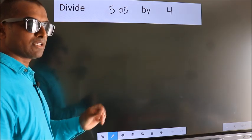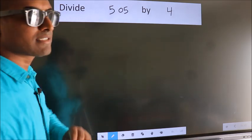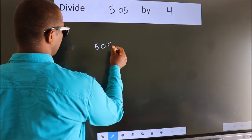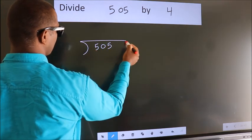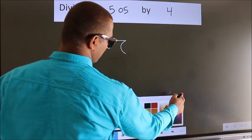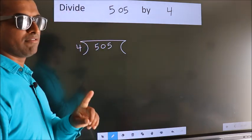To do this division, we should frame it in this way. 505 here, 4 here. This is your step 1.